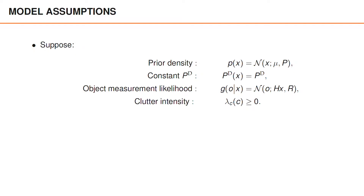In this video, we try to make sense of these equations by considering their expressions in a simple and important special case. To obtain a closed-form expression for the posterior density, we make three simplifying assumptions: first, that the prior is Gaussian; second, that the probability of detection is constant; and third, that the object measurement likelihood is linear and Gaussian. Note that we don't need to make any simplifying assumptions on the clutter intensity. We sometimes informally refer to a single object tracking model that satisfies these assumptions as linear and Gaussian, even though we have also assumed a constant probability of detection and even though we have unknown data associations.